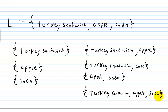Most of you at this point would stop and say I have seven subsets — but that would be wrong. I can always choose to take nothing. So I have my lunch pail and I can say I don't want anything; I'm going to choose nothing. This symbol is the symbol for the null or empty set. By definition, the empty set is a subset of every set.